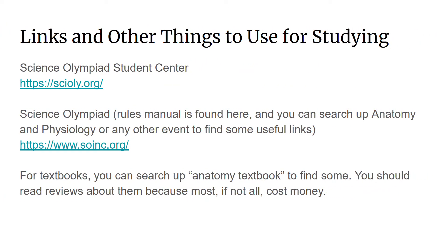Here are some links and other things used for studying. The Science Olympiad Student Center can be accessed below with that link. Science Olympiad's official website, where you can find the rules manual and search up anatomy and physiology for some useful links, has the URL below. For textbooks, you can search up anatomy textbook to find some, but this costs money, so you should be wise with which one you buy and look at some reviews.